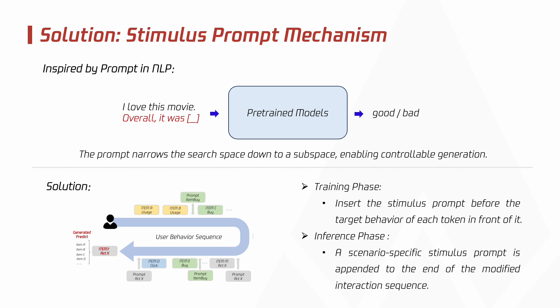Here's how it works. During the training phase, we add a stimulus prompt before the target behavior of each token. These prompts guide the model to understand and predict user behaviors more accurately. This helps the model learn the relationships between different behaviors and scenarios more effectively.